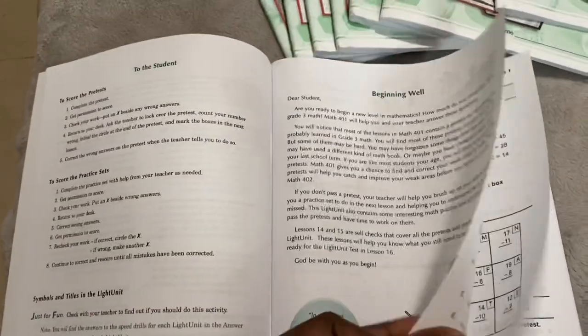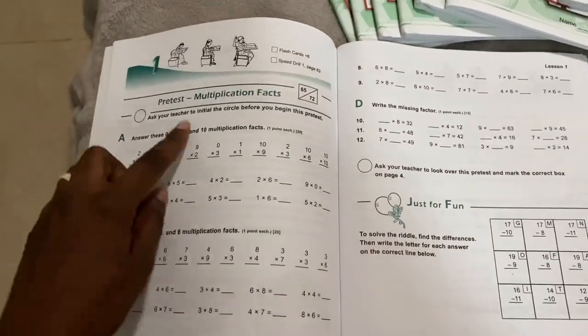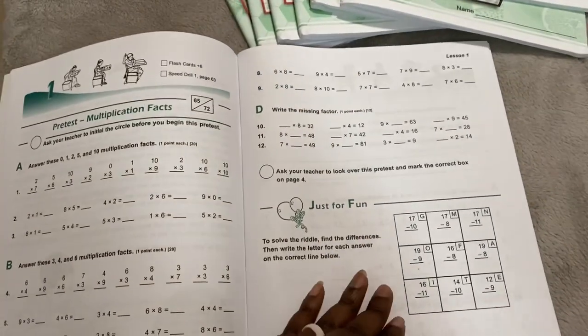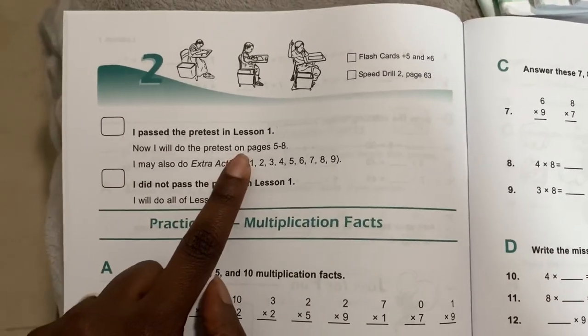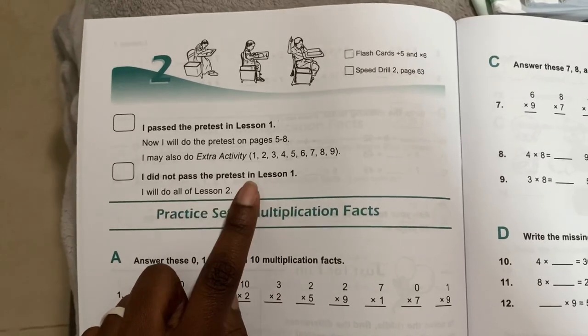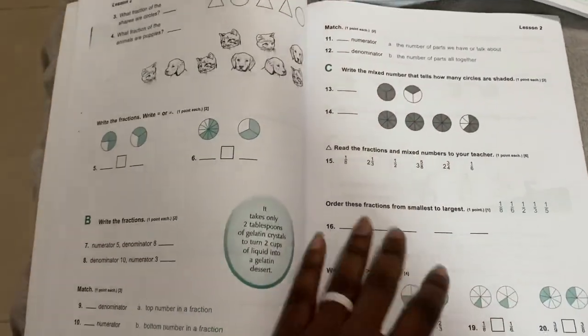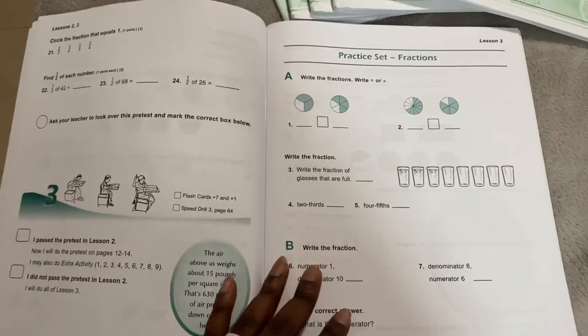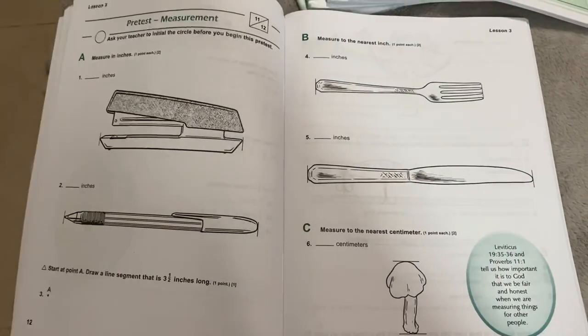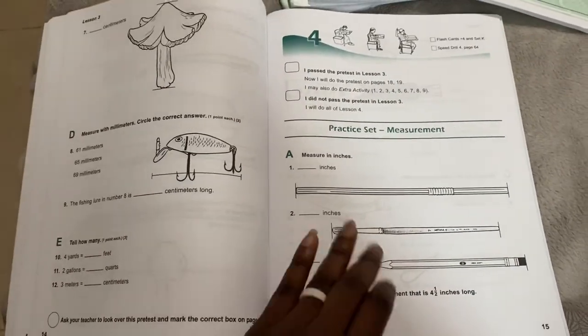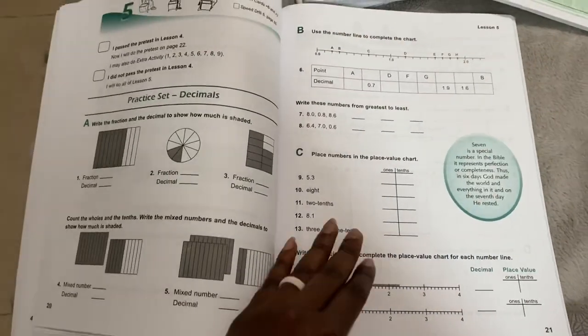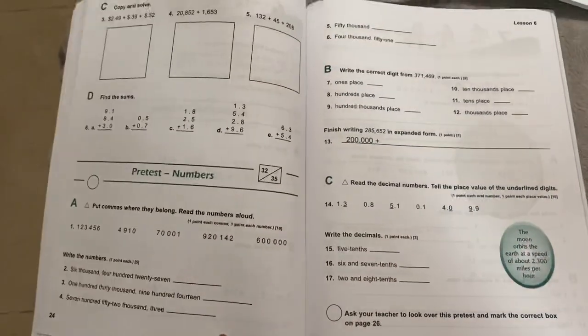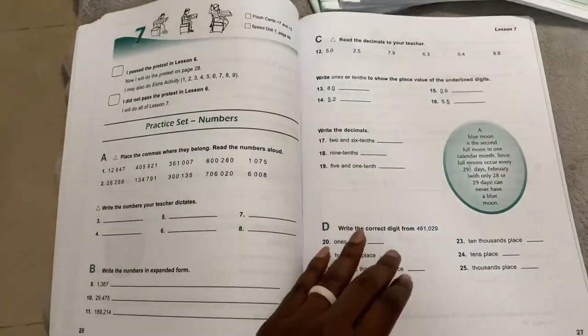So the O-1s are filled with pre-tests and practice sets to review what was learned in the previous levels. And so you go through each section and you do a pre-test. And then if they pass the pre-test, then they go on to the next pre-test. If they did not pass the pre-test, then they review the practice set from this lesson. So that is all the O-1s are.